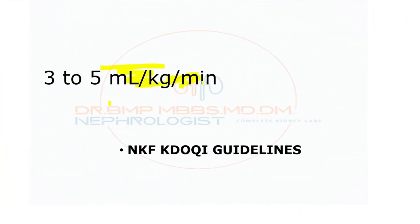Regarding blood flow, it ideally has to be 5 ml per kg per minute. In most dialysis machines, the blood flow cannot be reduced below 180, so 180 or 150 can be kept. These values are as per the KDOQI guidelines from the National Kidney Foundation.